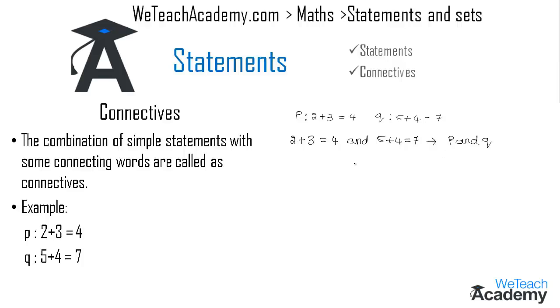We can also write: '2 plus 3 is equal to 4 OR 5 plus 4 is equal to 7', and this can be represented symbolically as p OR q.